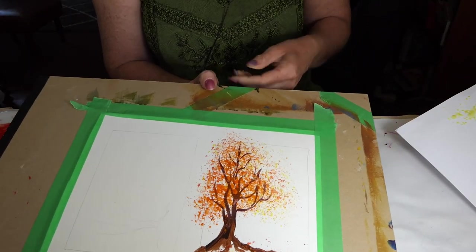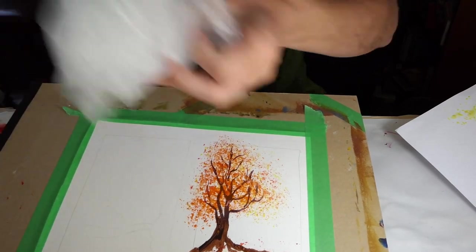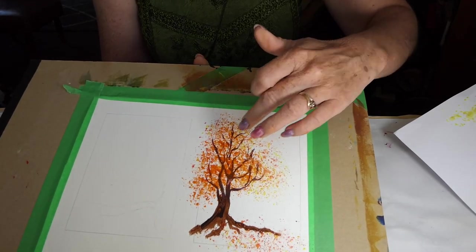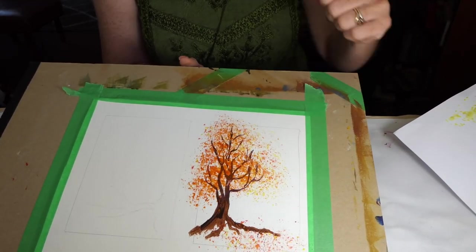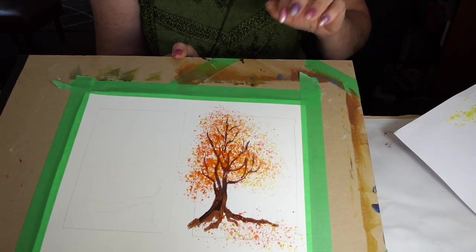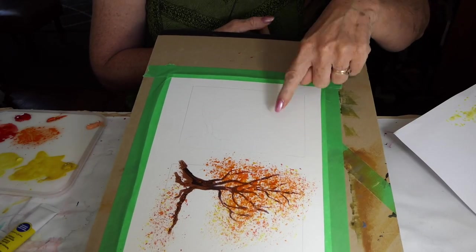Today I'm going to show you how to do an autumn leaf and we're going to use a plastic bag. So I've done this one here which I was actually going to show you how to do but I forgot to press record. So I'm going to show you how to do it with this one here.